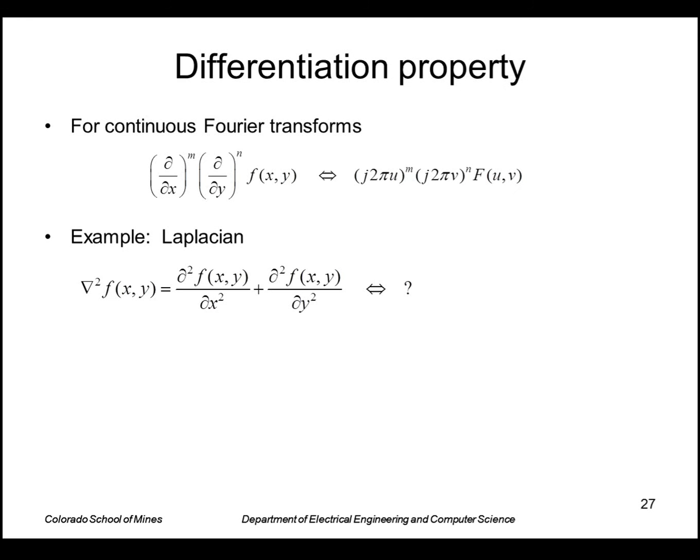The differentiation property is useful. You can show by plugging into the definition of the Fourier transform that taking the nth derivative in the x direction and the nth derivative in the y direction results in multiplication of the transform by these products here.